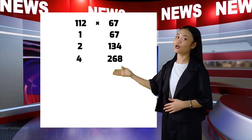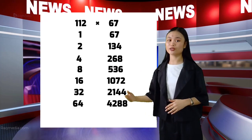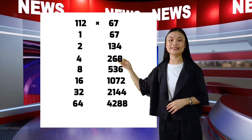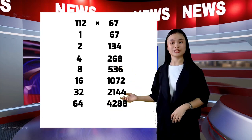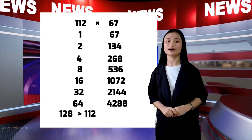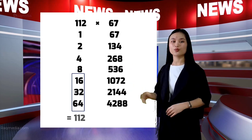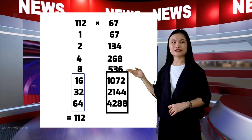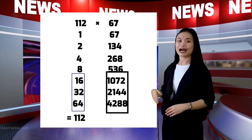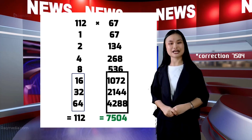Let's double the numbers. We find what numbers combine to equal 112: we have 64, 32, and 8. We stop at 64 because 64 plus 64 equals 128, which is more than 112. So we get the corresponding numbers of 8, 32, and 64, which are 1,072, 2,144, and 4,288. Adding these three gives us 7,504. So the product of 112 and 67 is 7,504.